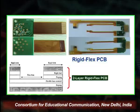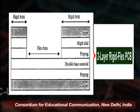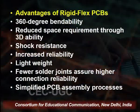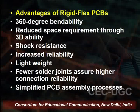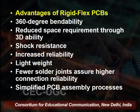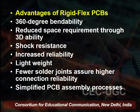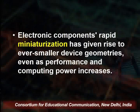On screen, the rigid-flex PCB shows flex material in the middle with rigid areas on both sides. The advantages include 360-degree bendability, reduced size requirements through 3D capability, shock resistance, increased reliability, light weight, fewer solder joints, higher connection reliability, simplified PCB assembly, and process simplification. Electronic component miniaturization has given rise to ever smaller device geometries even as computing performance increases.